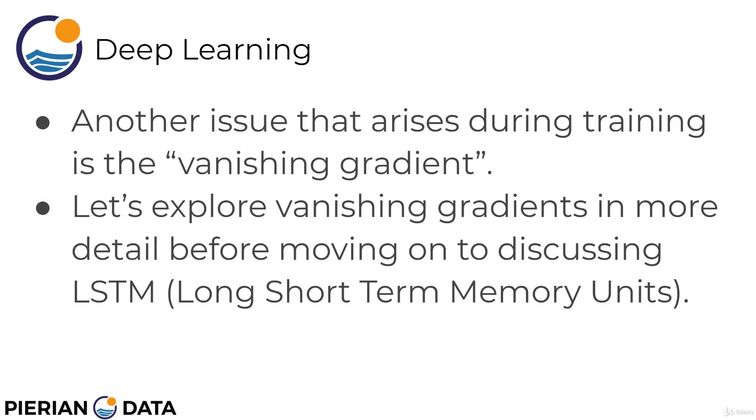Another issue that arises during training of a basic recurrent neural network is known as the vanishing gradient. So, what we're going to do is we're going to explore this idea of vanishing gradients in more detail, before moving on to discussing essentially an expanded idea of the recurrent neuron called a long short-term memory unit. And the long short-term memory unit solves this problem of only dealing with short-term memory of the previous historical output at t-1. We're going to be able to have a long-term memory and a short-term memory. So, before we do that, I want to talk about vanishing gradients, and then we'll move on to discussing LSTM units. And after that, we'll have all the theory we need in order to begin programming this with Python. I'll see you at the next lecture.